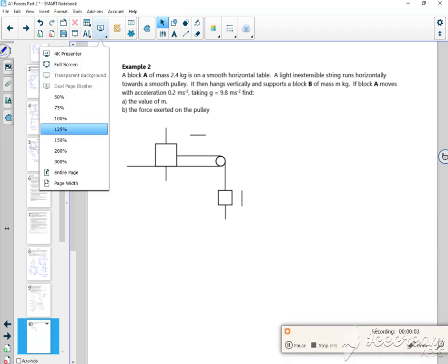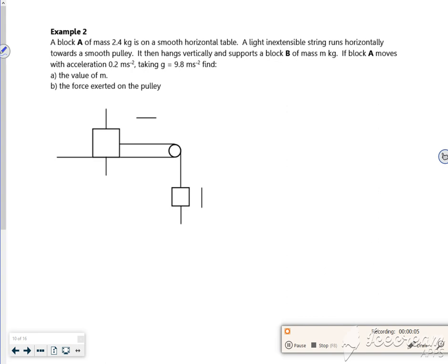These ones are really nice, this idea of a block being pulled along. It says block A of mass 2.4 kg, so there's A with 2.4g acting down and a resultant against it. It's on a smooth horizontal table, so there's no friction.